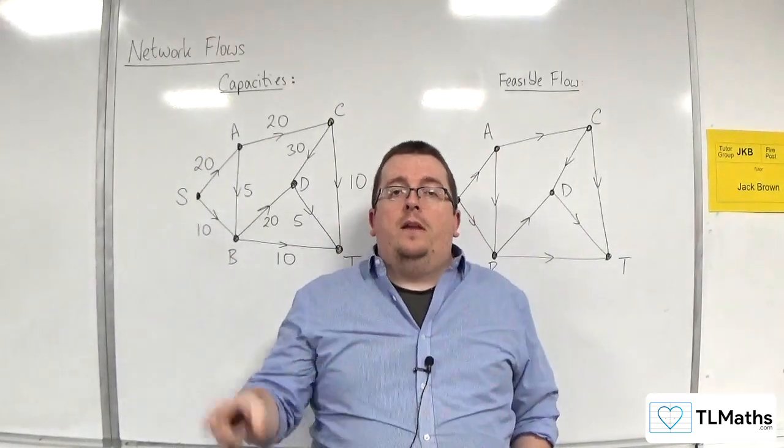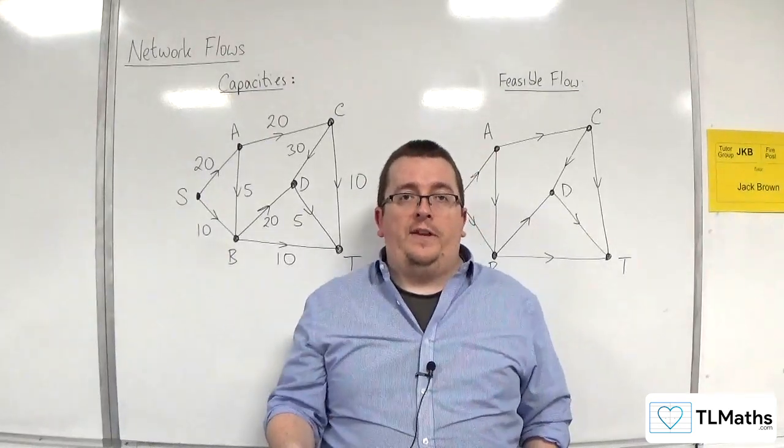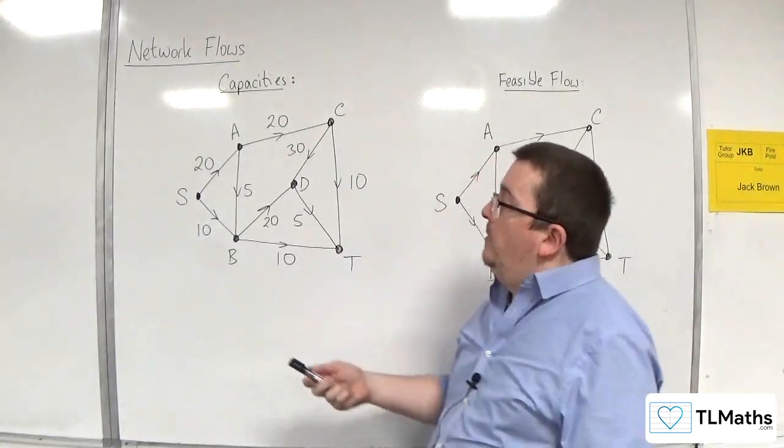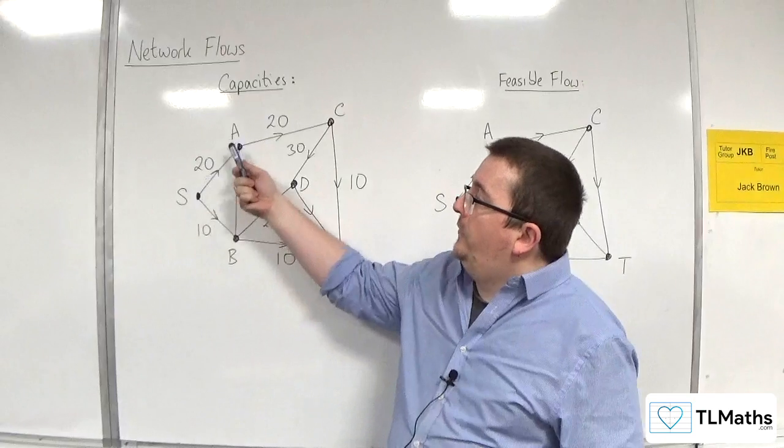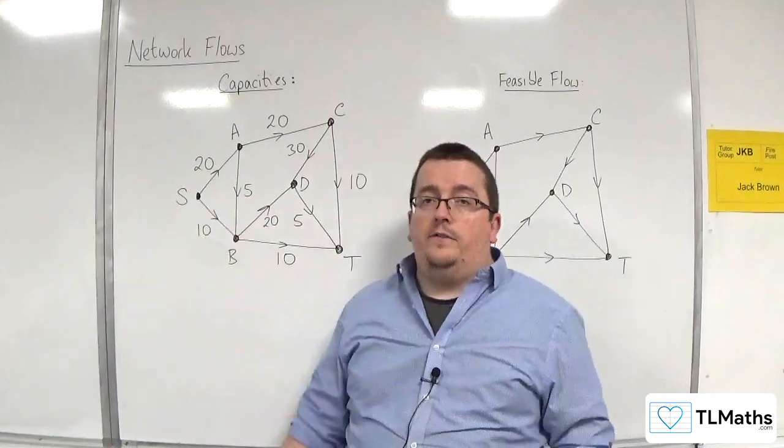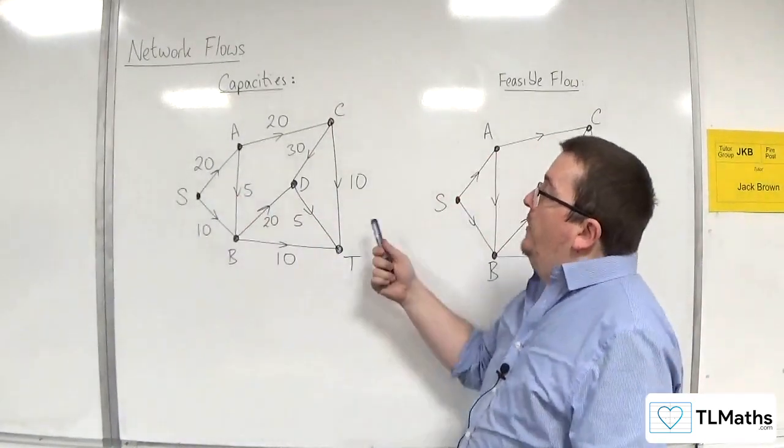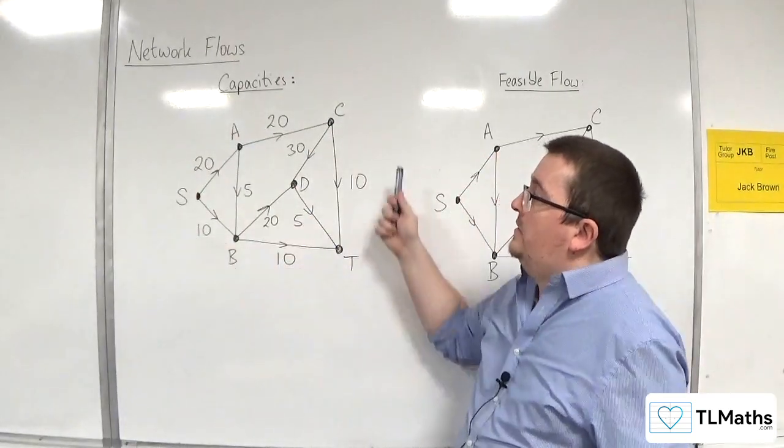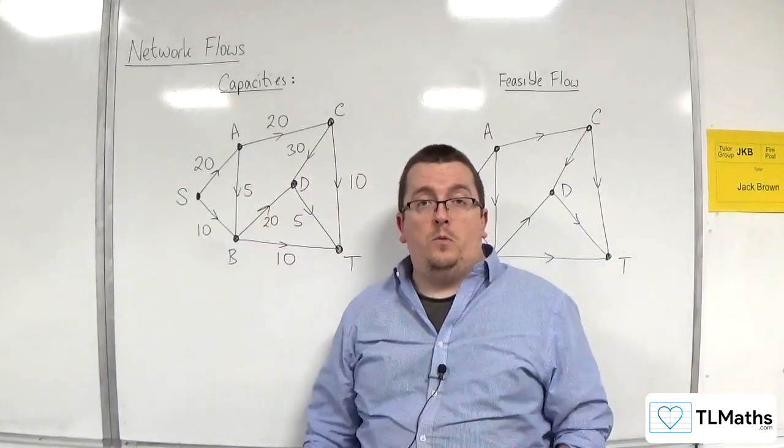Now, there are a couple of things to take note of. Firstly, an arc cannot exceed its capacity. For example, I can't have a flow going from S to A of 25, because the capacity is 20. This network shows the capacities of a network that we're going to be working with.